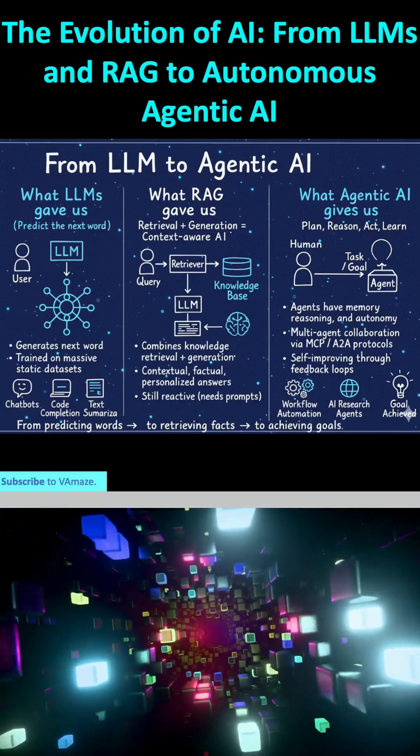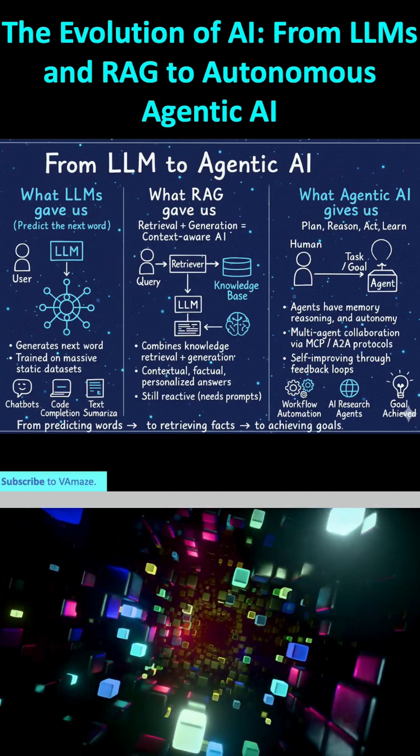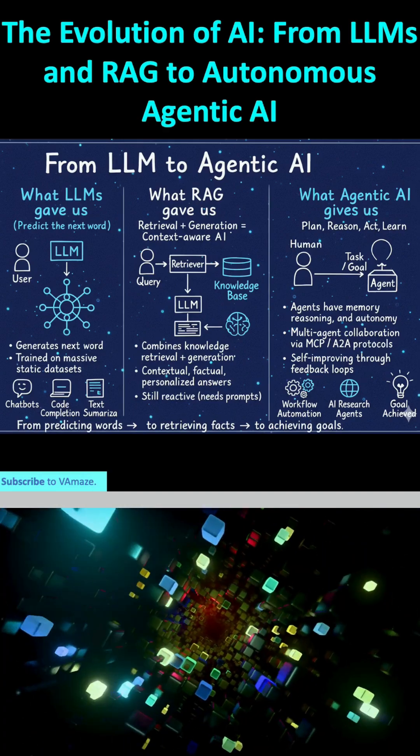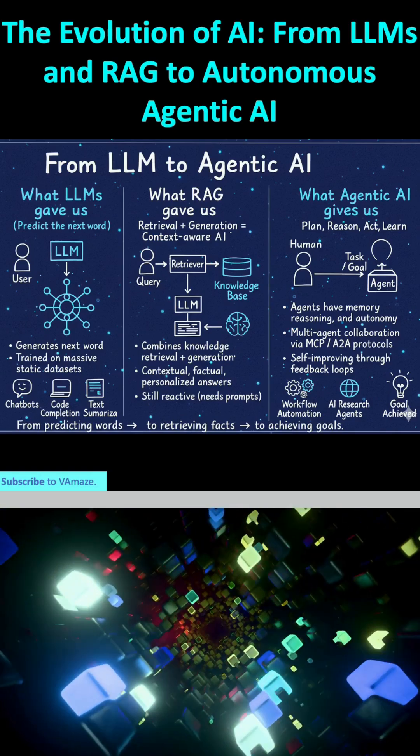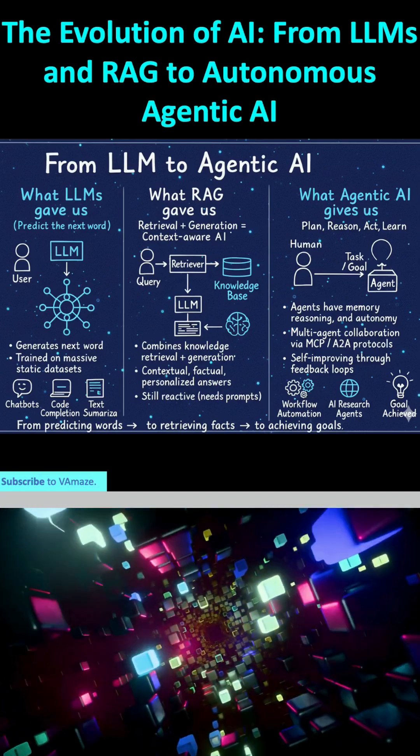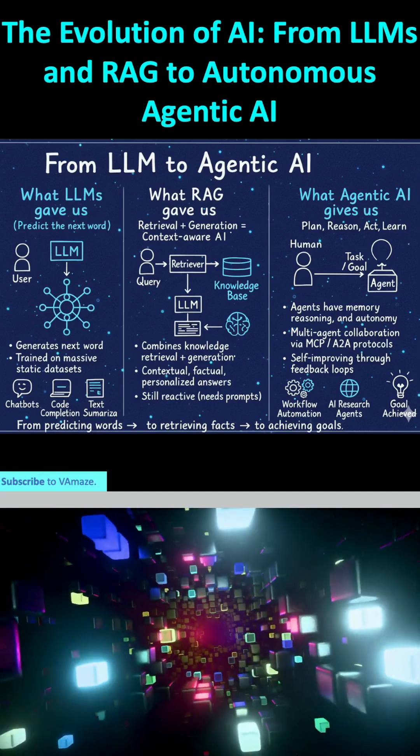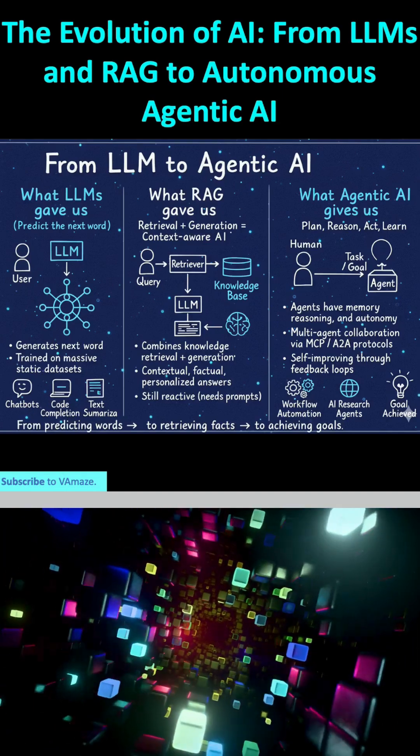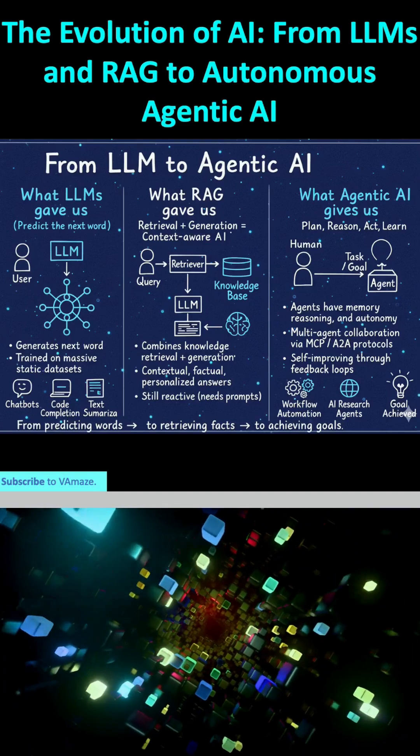Next, we move to what RAG gave us. While LLMs are powerful, their knowledge is limited to their training data and can become outdated. This is where retrieval augmented generation, or RAG, stepped in. RAG combines the generative power of an LLM with the ability to retrieve information from an external, up-to-date knowledge base.